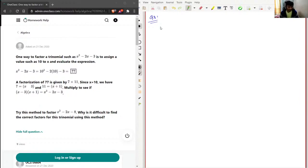And then I'll just read the question instead of writing it. So evaluate the expression - they have taken x as 10 and they have factorized the equation. Find the factors so that x is equal to 10. So a factorization of 77 is given by 7 into 11. Since x is equal to 10, we have 7 equal to x minus 3 and 11 equal to x plus 1.